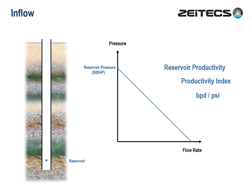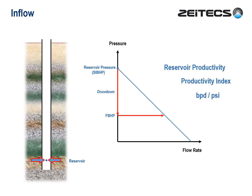Here's how it works. If we draw down — that is, lower the pressure at our imaginary point — then fluids will flow to that point at a specific rate. We then have a flowing bottom hole pressure at that point. If we draw down more, the flow rate will be higher. The great thing about this is that all the relevant reservoir and fluid properties are built into this single line: the PVT properties of the fluids, the temperature, the porosity, permeability, height, net to gross, and the skin — which is the amount of damage the drillers do when they drill the well. So we have a very simple, but very powerful tool.